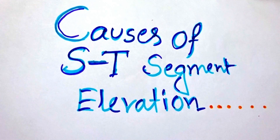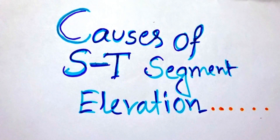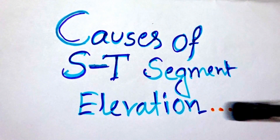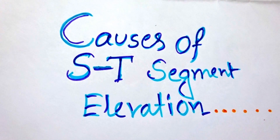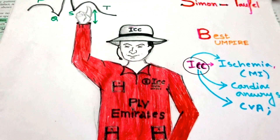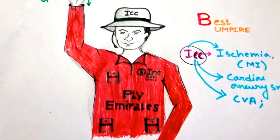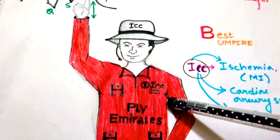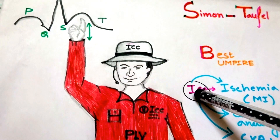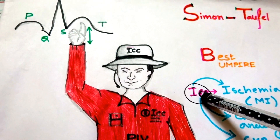Hello friends. Today we have the mnemonic of causes of ST segment elevation. Here comes our visual mnemonic — Simon Toffel, the best umpire of ICC.